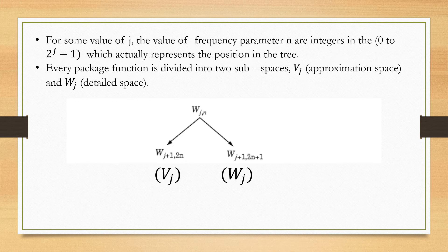Generalizing the above concept, each packet function can be divided into two subspaces: approximation space Vj, that is W_(j+1, 2n), and detail space Wj, that is W_(j+1, 2n+1).